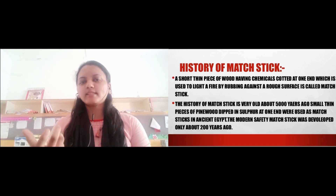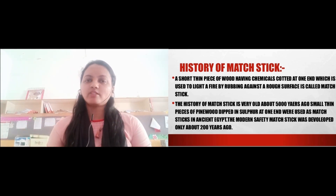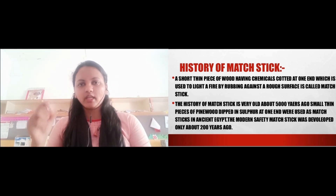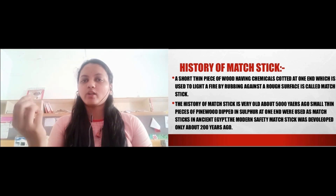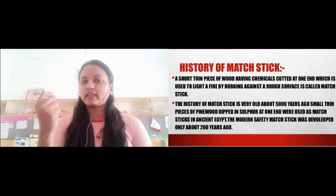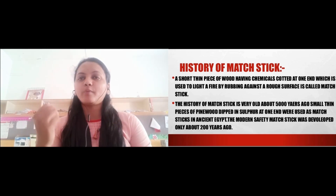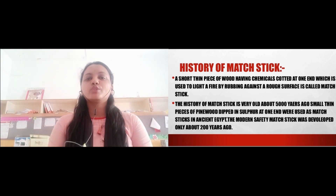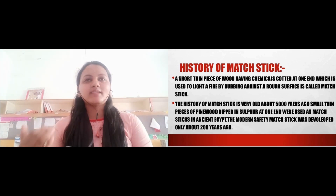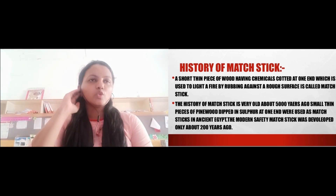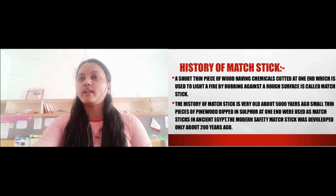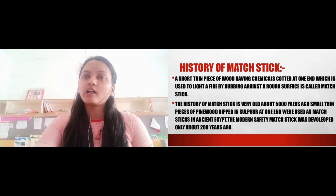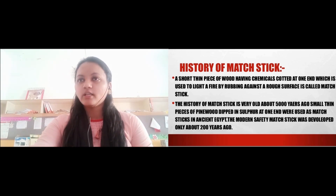So what is actually a matchstick? A matchstick is a short, thin piece of wood. The upper tip, which is red and black in color, is made up of sulfur. A short thin piece of wood having chemicals coated at one end, which is used to light a fire by rubbing against a rough surface, is called a matchstick.